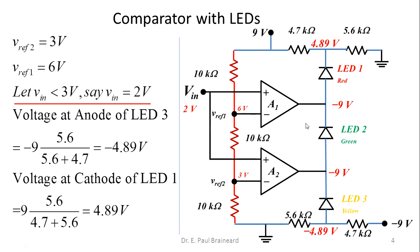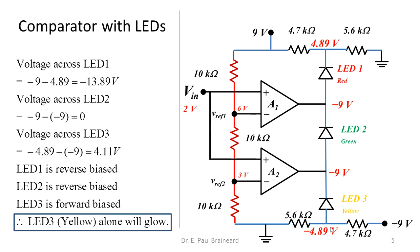Now we compare the voltages across all the LEDs. The voltage across LED1 is −9V − 4.89V = −13.89 volts. The voltage across LED2 is −9V − (−9V) = 0 volts. The voltage across LED3 is −4.89V − (−9V) = 4.11 volts.